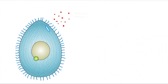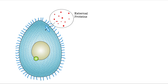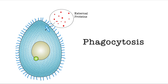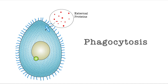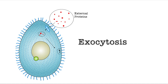In Tetrahymena, microtubules are polymerised with tubulin protein from the cell to move external material into the cell's oral groove via phagocytosis. The protein can then be ingested through the cell membrane, forming a food vesicle. Waste products can later be released from the cell via the process of exocytosis.